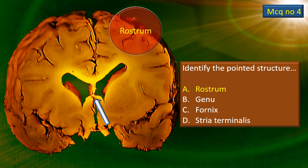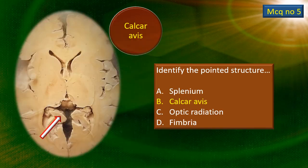Slightly behind the previous section you can see the rostrum, which forms roughly the floor of this part of the lateral ventricle. The last MCQ answer is the calcar avis — this is the calcar avis, the prominence raised because of the calcarine sulcus.